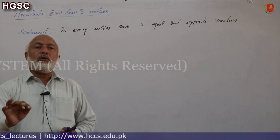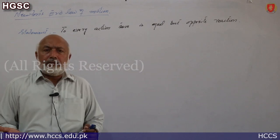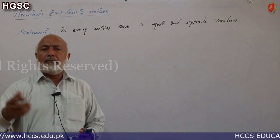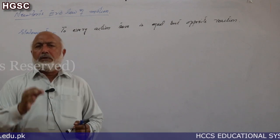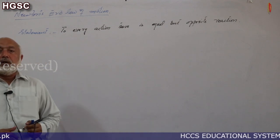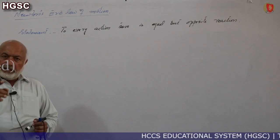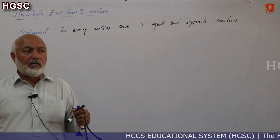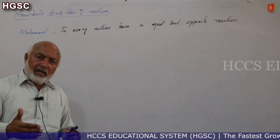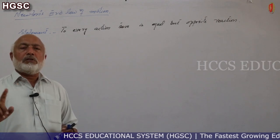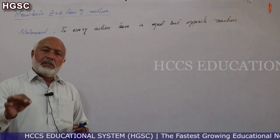Inka mathematical sum zero hoga kyunke equal but opposite hain. Lekin inka effect zero nahi hota — yeh badi important baat hai. Wajah yeh hai ke ek body par ek force lag rahi hai, aur doosri body par doosri force — alag alag bodies par alag forces hain. Isliye action aur reaction ka sum zero hai lekin effect kabhi zero nahi ho sakta.